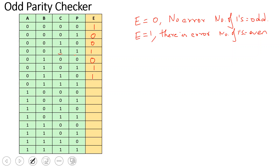Row 0, 1, 1, 0: number of ones is 2, which is even, so error is 1. Row 1, 0, 0, 1: I have an even number of 1s, so error is 1. You fill the remaining rows similarly. This will become 0, 1... again this will be 0, this will be 1.